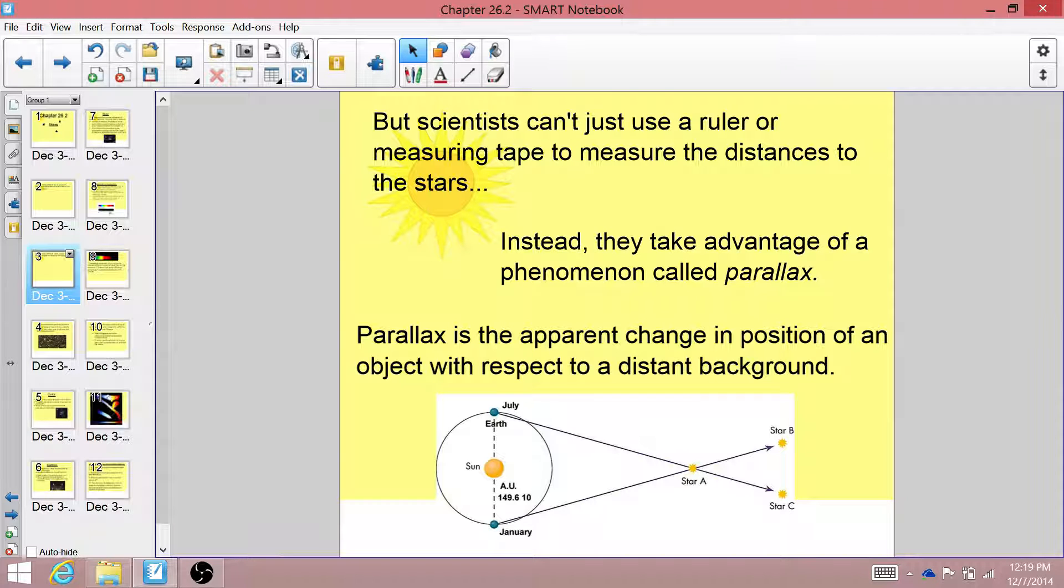Close your right eye and open your left eye. You should see whatever wall or object is behind your finger kind of shift back and forth as you switch eyes. That's called parallax, and that's what scientists use to measure the distance to the stars.